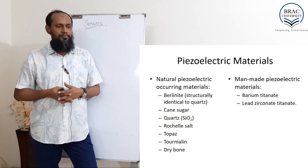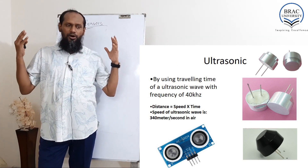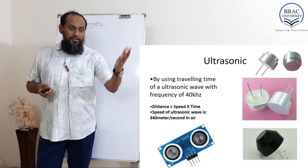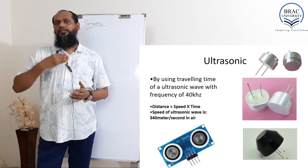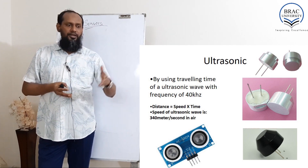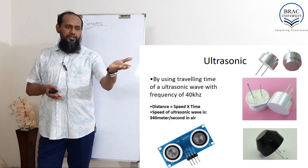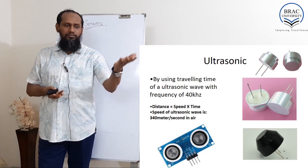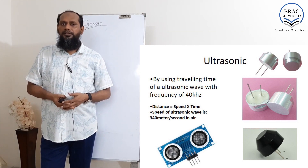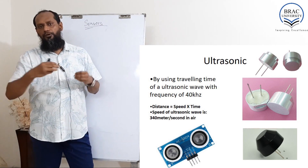Ultrasonic sensors always have two parts: one emitter and one receiver. By using the traveling time, it measures the distance. An ultrasonic sensor uses 40 kilohertz sound. Distance equals speed multiplied by time. The speed of the ultrasonic wave in air is known — 340 meters per second — and the time can be calculated. By using this equation we can easily calculate the distance of the object from the sensor.